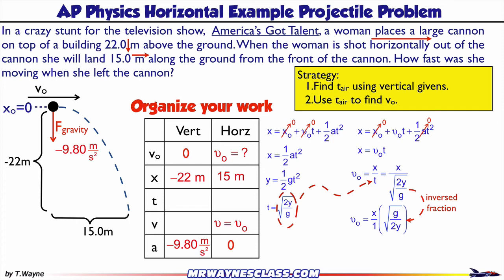Now at this step I can put in the numbers. So v₀ = 15 meters times the expression of the square root of 9.8 meters per second squared divided by 2 times negative 22 meters. And that 9.8, it's missing on the diagram but it should be negative 9.8 meters per second squared. That way the negatives cancel out so I can find the square root of that number. And the final answer is going to be 8.57 meters per second. So the woman on America's Got Talent was shot out of the cannon at 8.57 meters per second.